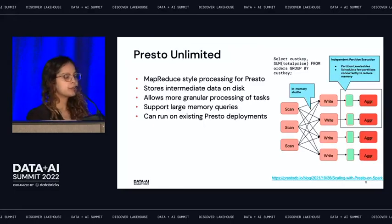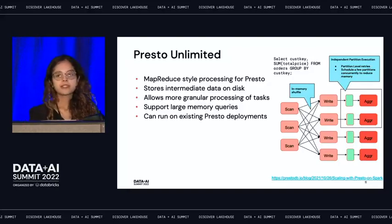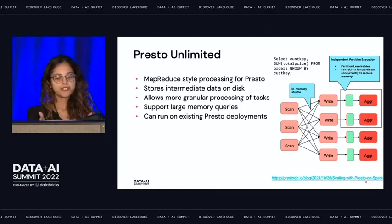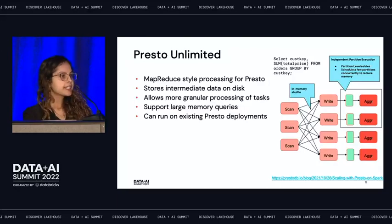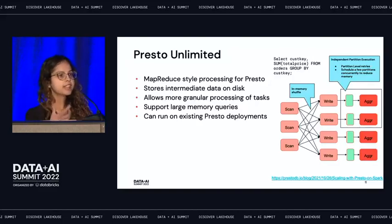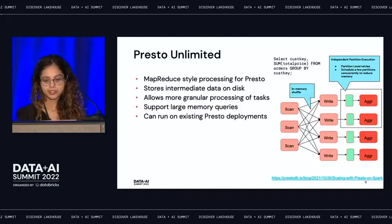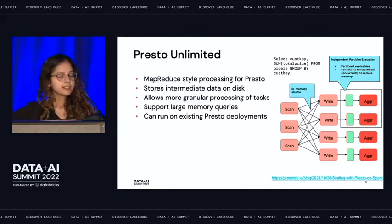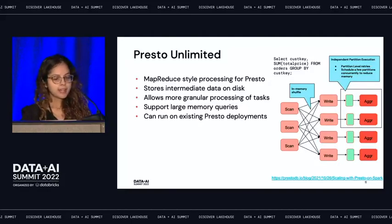Presto Unlimited was developed at Facebook to solve the shuffle problem. It brings MapReduce-style shuffle to Presto — instead of shuffle data being streamed from mappers to reducers, intermediate data is persisted on disk. For an aggregation on customer key, it does not have to load all data into memory but can load data for a few partitions at a time, reducing peak memory usage. And because intermediate data is persisted, if there are task failures, you can always retry, bringing more reliability to query execution.